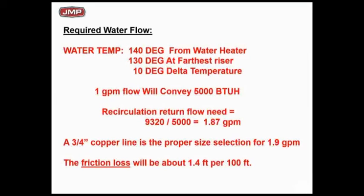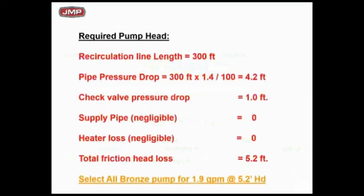Now if I use a 3/4-inch copper line for the hot water return, the friction at 2 GPM through that 3/4-inch pipe is 1.4 feet per 100 feet of pipe from the Balagosic system sizing chart. Adding that all together — including a check valve, not worrying about the large supply pipe with only 2 GPM flowing, and not worrying about the water heater at 2 GPM — my total friction loss for the pump is 5.2 feet. To make a long story short, you need to pick a pump for 2 GPM at 5 feet of head. That's why 90% of the time this sizing exercise doesn't take long.